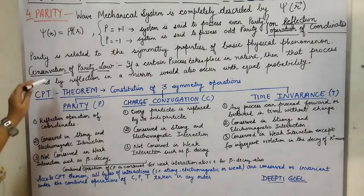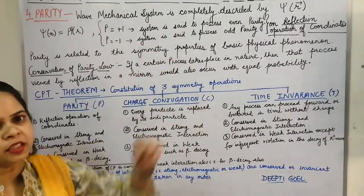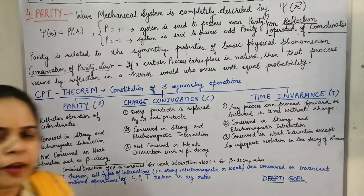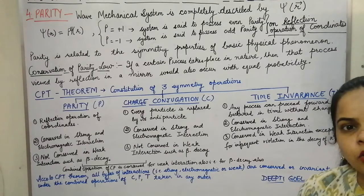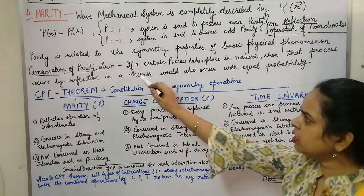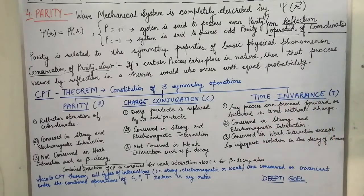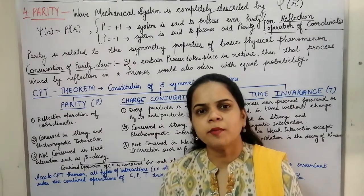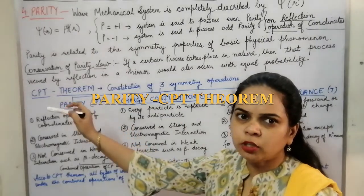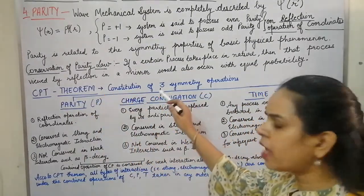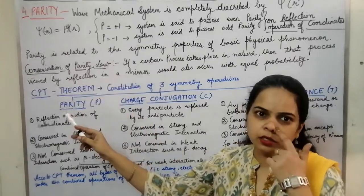According to Leibniz, the conservation law states that if a process is viewed by reflection in a mirror it would also occur with the same or equal probability. Beyond parity, the CPT theorem involves three symmetry operations: parity (P), charge conjugation (C), and time invariance (T). Parity involves reflection of coordinates; charge conjugation replaces every elementary particle with its antiparticle; and time invariance examines whether the process is symmetric when run in reverse.